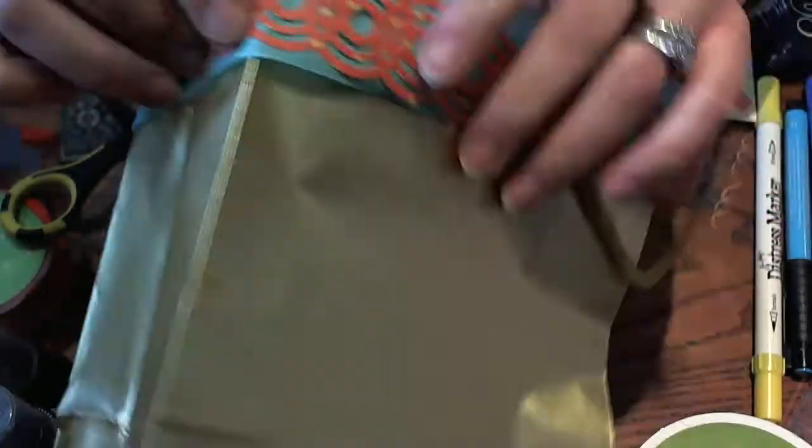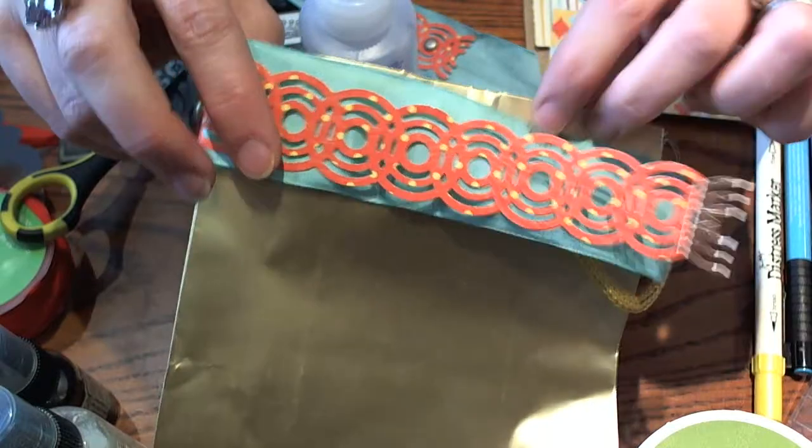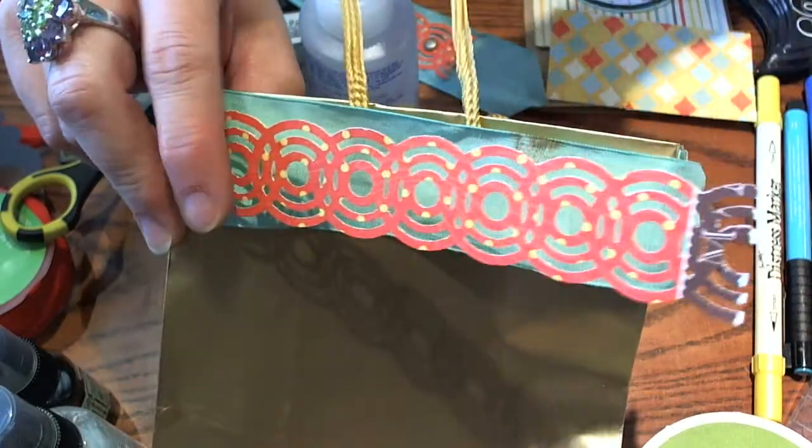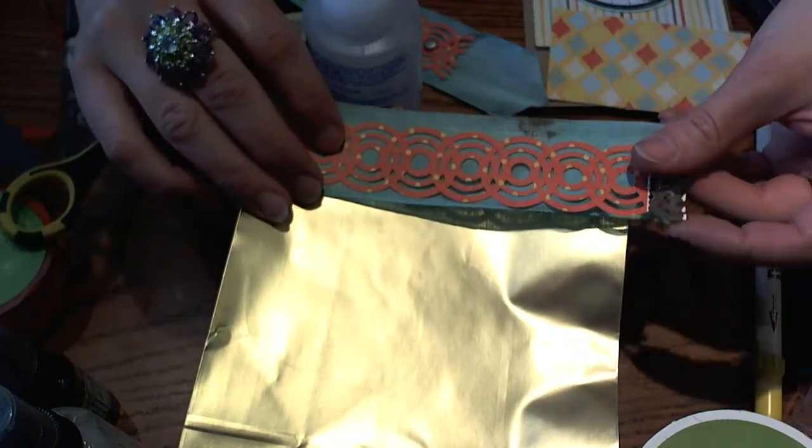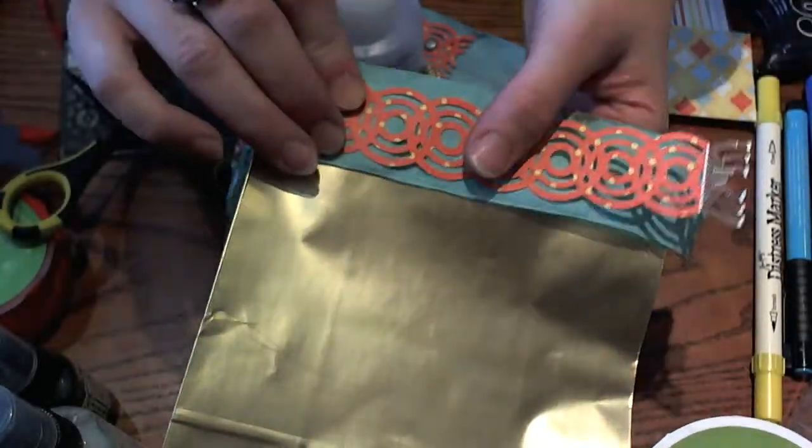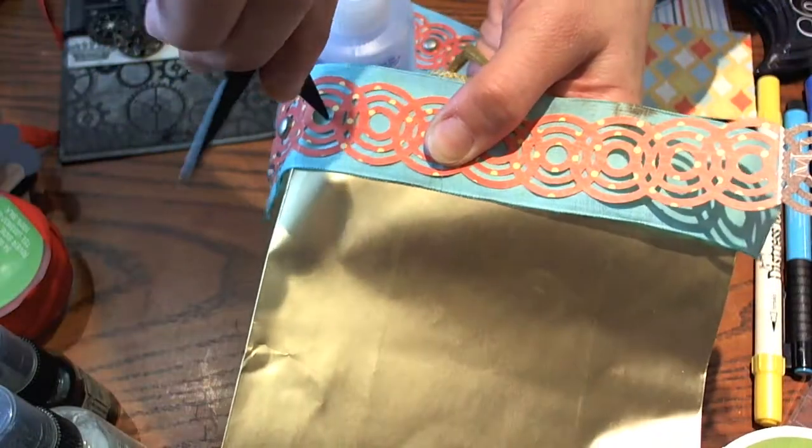And you have an easy way to attach your trim to the bag. I wanted to make sure that my handle was up so that it didn't interfere with a place for him to grab on. You're just going to keep doing that all the way around the bag.